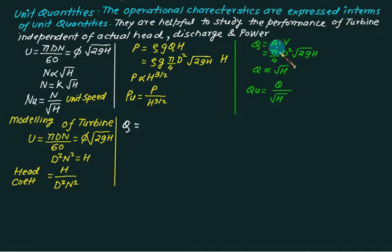Then we have a flow coefficient which is equal to area into velocity. Area is given by π by 4 d square and the flow velocity can be given as certain function ψ under root of 2gh. Now π by 4 ψ and under root 2g is constant.